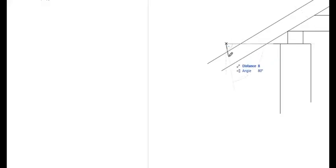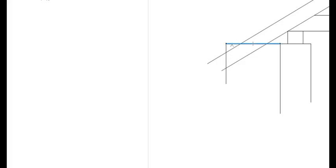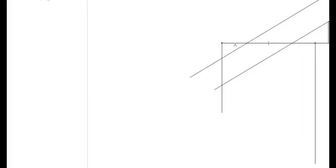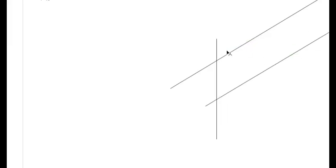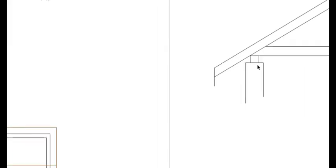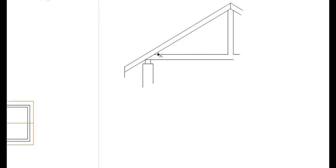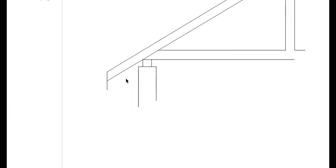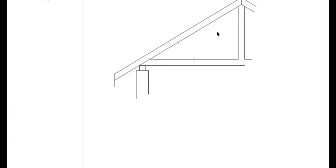Then draw a straight vertical line — that is where our fascia board is going to be. We are going to erase the construction line because we don't need it anymore. Erase that one and erase this one. The other thing you need to do is draw our struts.